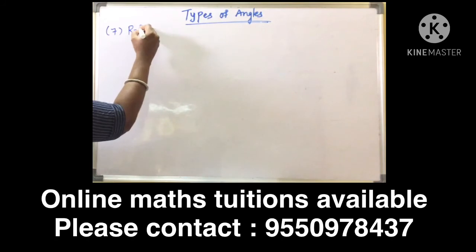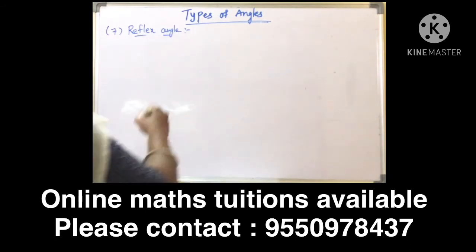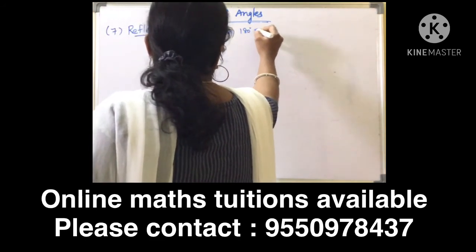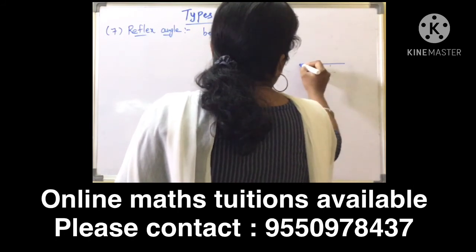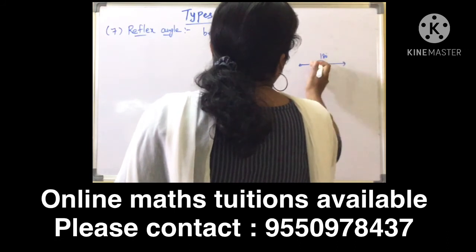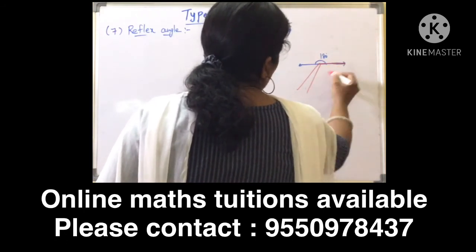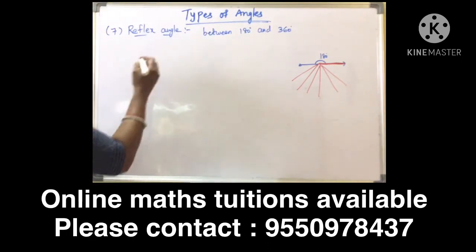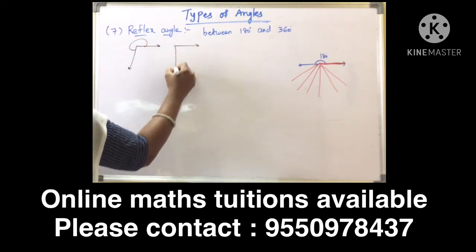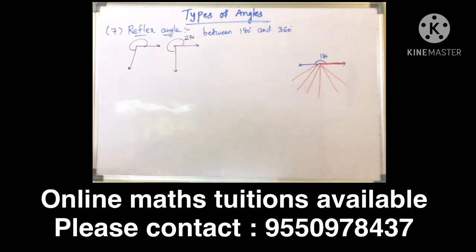Next is reflex angle. A reflex angle is an angle whose measure lies between 180 degrees and 360 degrees. The shape of a reflex angle is more than a straight line — for example, 270 degrees, which is 180 plus 90. So a reflex angle is an angle whose measure is between 180 and 360 degrees.